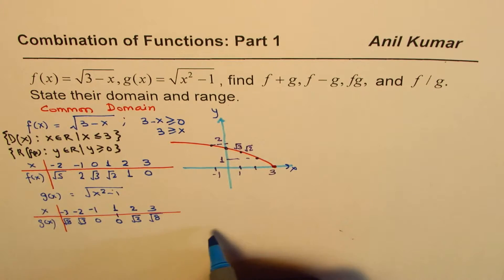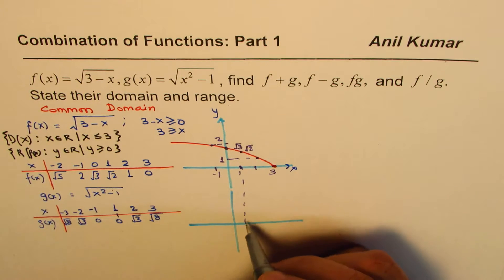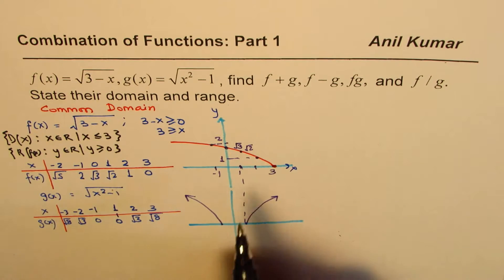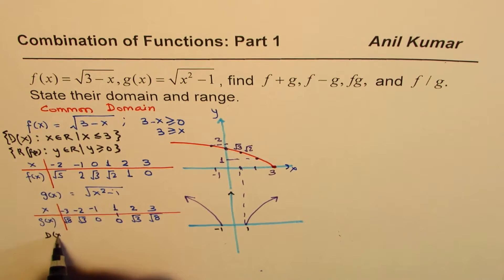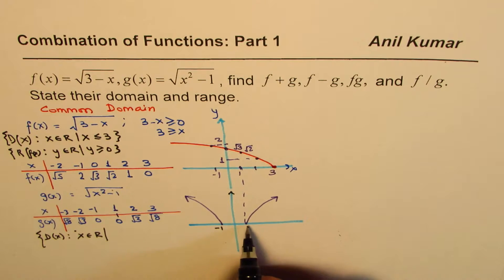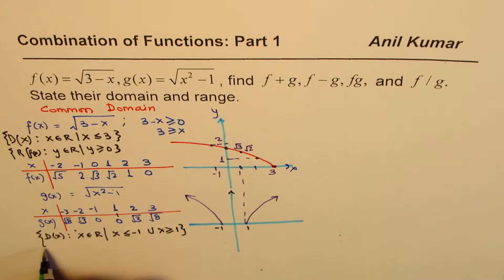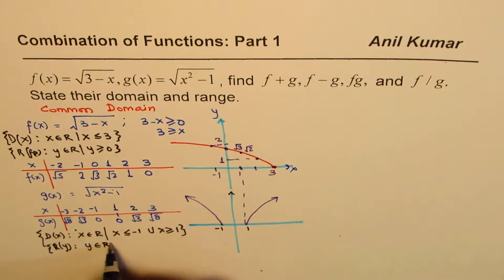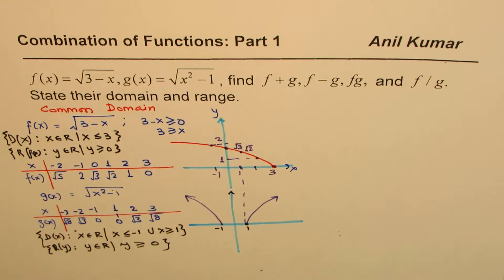If we sketch g of x, at x equals 1 it is 0 and then it increases. Similarly from minus 1 it increases, and the graph is symmetric about the y-axis. The domain of g of x is x belongs to real numbers where x is less than or equal to minus 1, union x is greater than or equal to 1. The range is y belongs to real numbers where y is greater than or equal to 0.